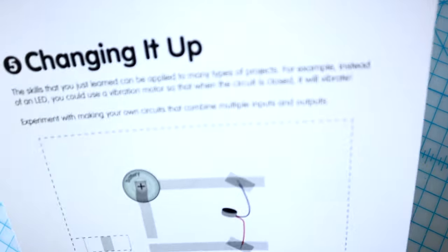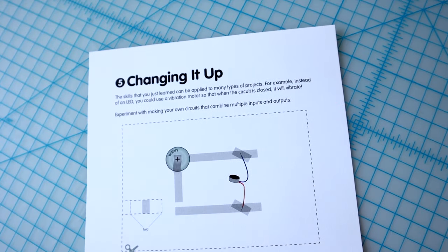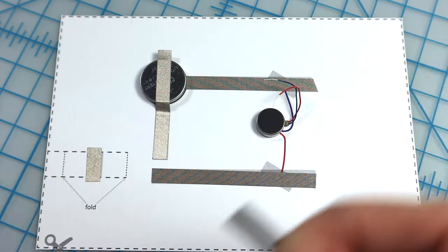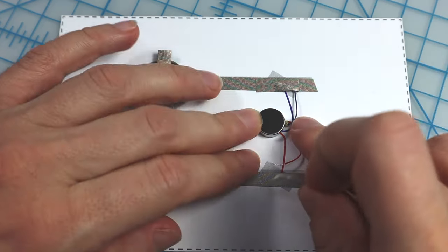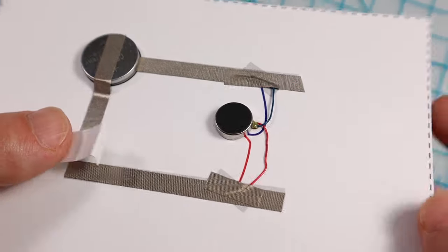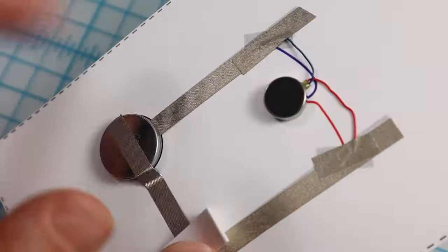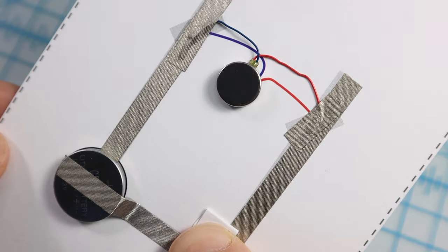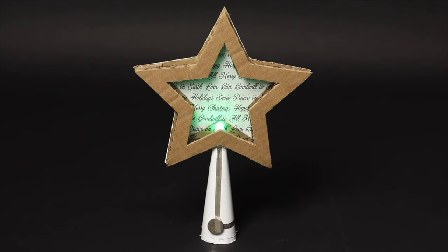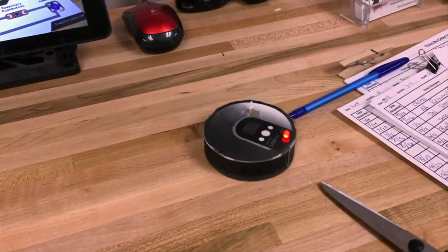Now that you understand the basics of making paper circuits, let's try to change things up a bit. In this example, I used the same simple switch circuit, but instead of LEDs, I used a vibration motor as the output. Now, when I close the switch, the paper vibrates instead of lighting up. With these paper circuit techniques, you can build all kinds of projects.